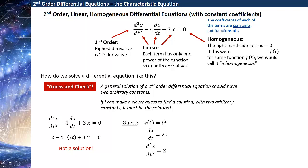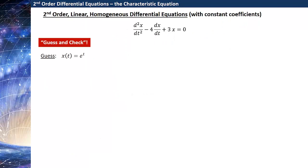Okay, so we guessed wrong. Maybe that's not terribly surprising — we just made a random guess. Let's make a better guess. Let's guess x of t is equal to e to the t. This might seem like a reasonable guess. Our second derivative and first derivative terms need to cancel against the original term. And when we take x of t equal to e to the t, it gives us the same e to the t back again. So that seems reasonable.